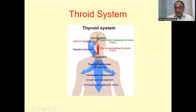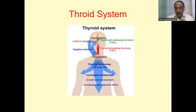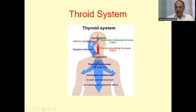The basic control of the thyroid system is in your brain. The hypothalamus gives a signal to the anterior pituitary gland, also in the brain. The pituitary gland has thyroid stimulating hormone — TSH — which we can test in the blood at the laboratory. The hypothalamus signals the pituitary via thyrotropin releasing hormone — TRH — and the pituitary then signals the thyroid via TSH. The thyroid secretes hormones T3 and T4, which are responsible for increased metabolism, growth and development, and increased catecholamine effect.